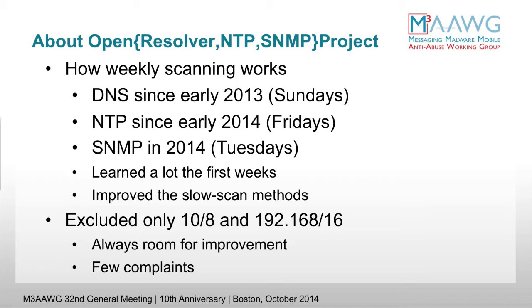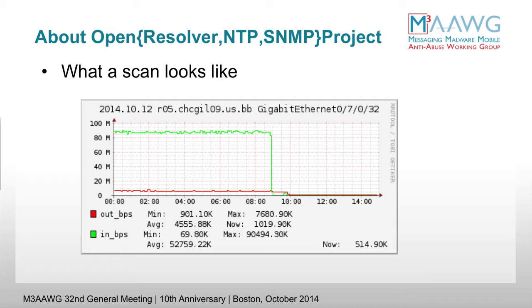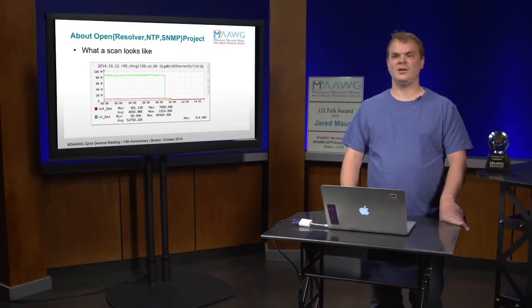I learned a lot in the first couple of weeks of performing these projects, not only in the methodologies of scanning, but in what to expect from sites when they receive this scanning activity. I wanted to share briefly what a scan actually looks like. The green line is the outbound traffic from the machine performing the scanning and the red line is the response traffic. For me as a network person, it's a low bit rate to see 100 megs coming out of a machine, but the very interesting thing is how you have this tail of receive activity that continues to come for over an hour afterwards.